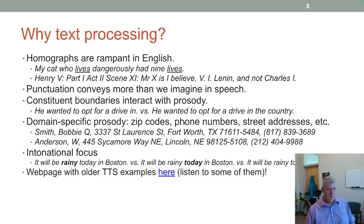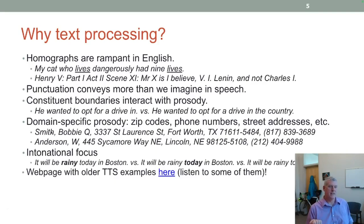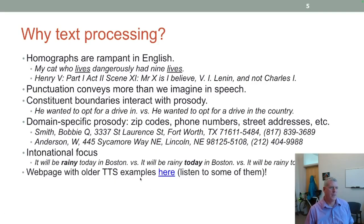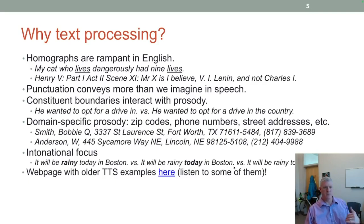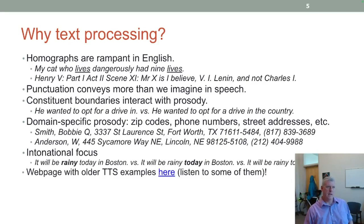There's also domain-specific prosody like zip codes, phone numbers, and street addresses. There's a 'Everybody Loves Raymond' episode where his dad doesn't say the phone number the expected way, and Raymond has to correct him. So there's prosody around numbers and addresses. There's also intonational focus: 'It will be rainy today in Boston' — if you stress 'rainy' it has longer duration and higher intensity, contrasting with stressing 'today' or 'Boston' to contrast with a different day or location.